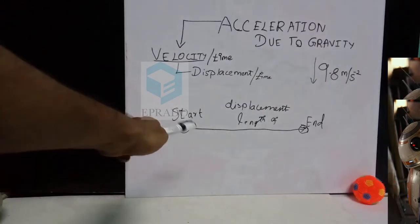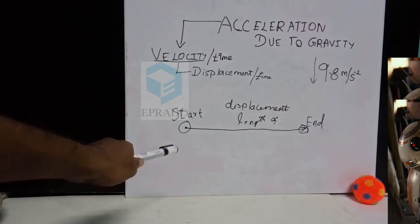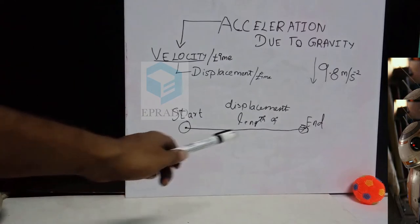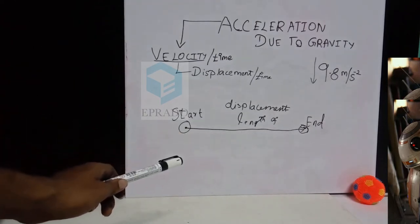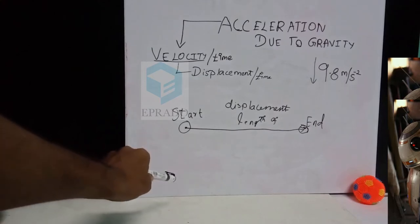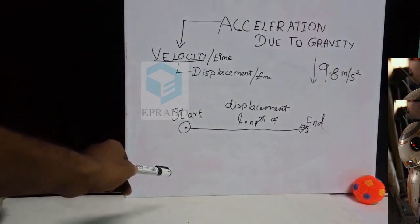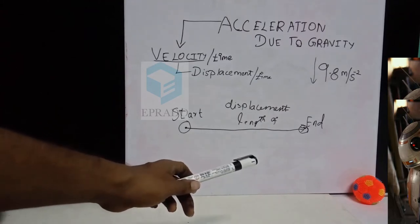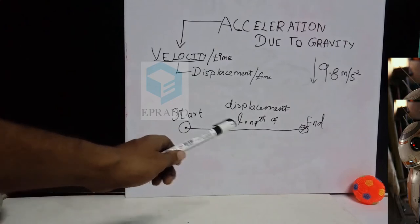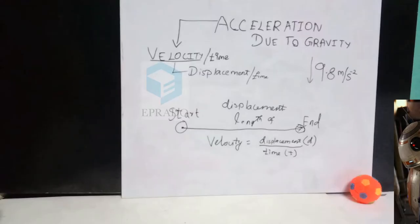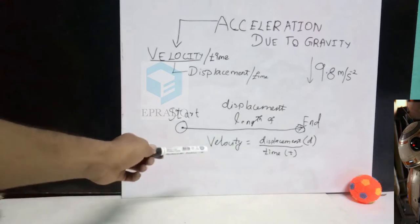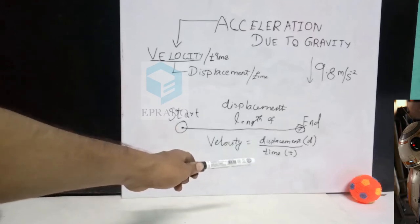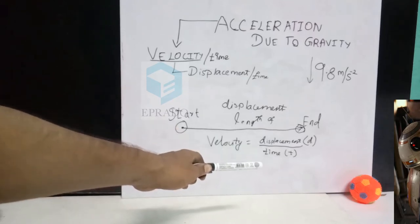Now, displacement is the length of the straight line between the start point and the end point of the ball — that is from here to there. The length of the straight line between the start point and end point of the ball is called displacement. In order to find out the velocity of the ball, we apply the formula: velocity is equal to displacement divided by time taken.